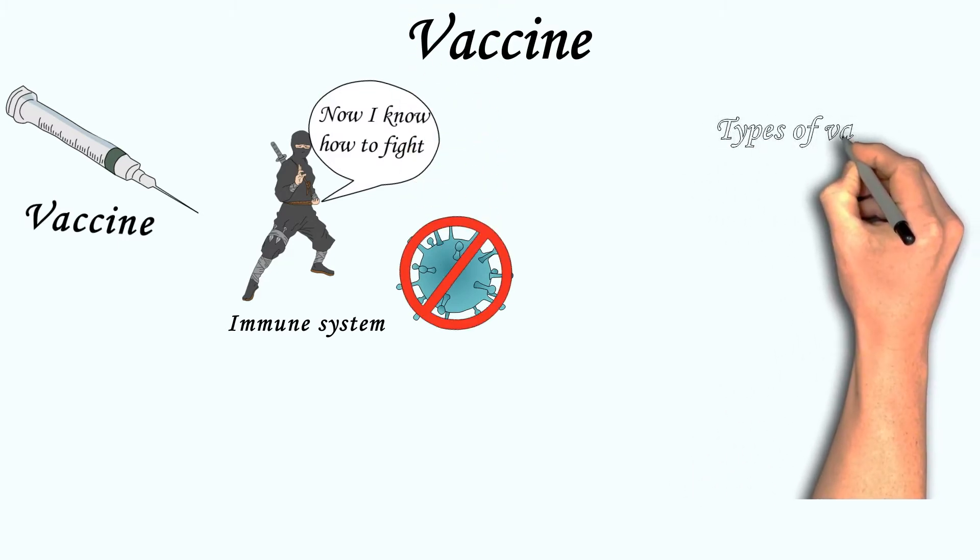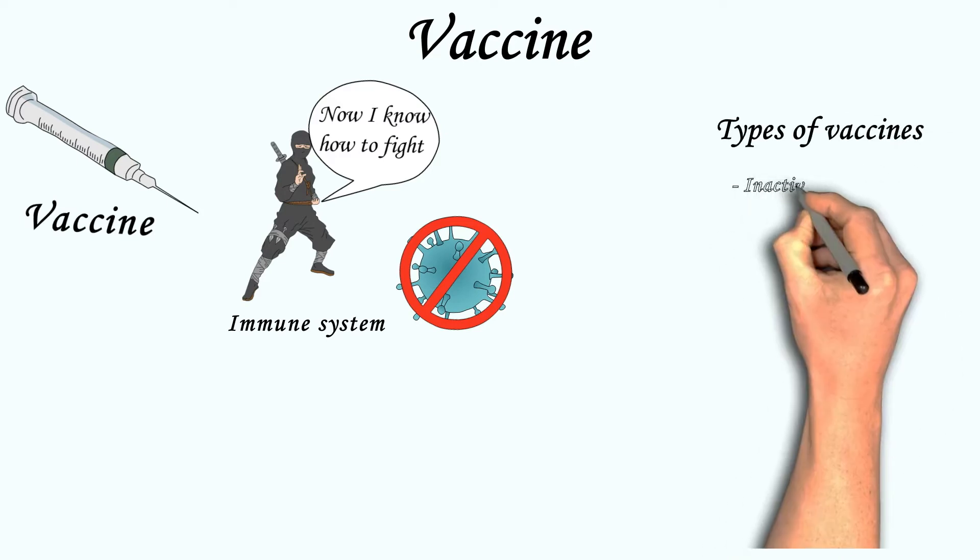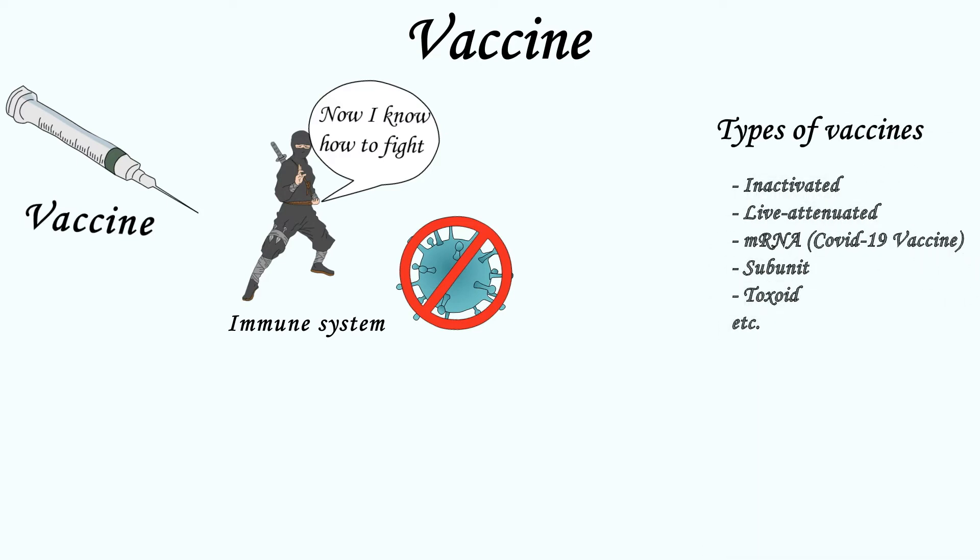Main types of vaccines: inactivated, live attenuated, mRNA, subunit, and toxoid.